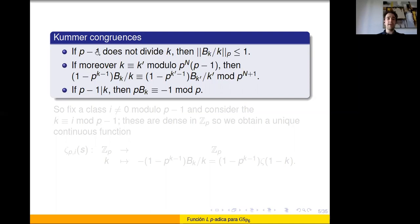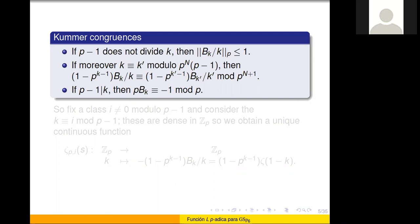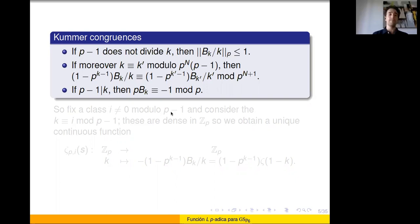The third property addresses what happens when p minus 1 divides k, which was not covered in the first two. In that case, the Bernoulli number has a simple denominator of just p. So when we multiply by p, we get minus 1. They are not integers, but they are p-adic units. This motivates the construction of a p-adic function.